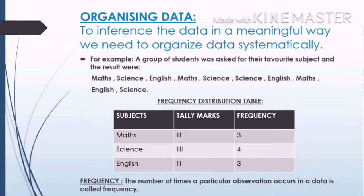Maximum number of students like English, so we can define frequency as the number of times a particular observation occurs in the data. With the help of this frequency distribution table, we can organize the data in a systematic way so that you can easily understand the meaning of the data. Now to make it more clear, let us understand this with the help of some examples.